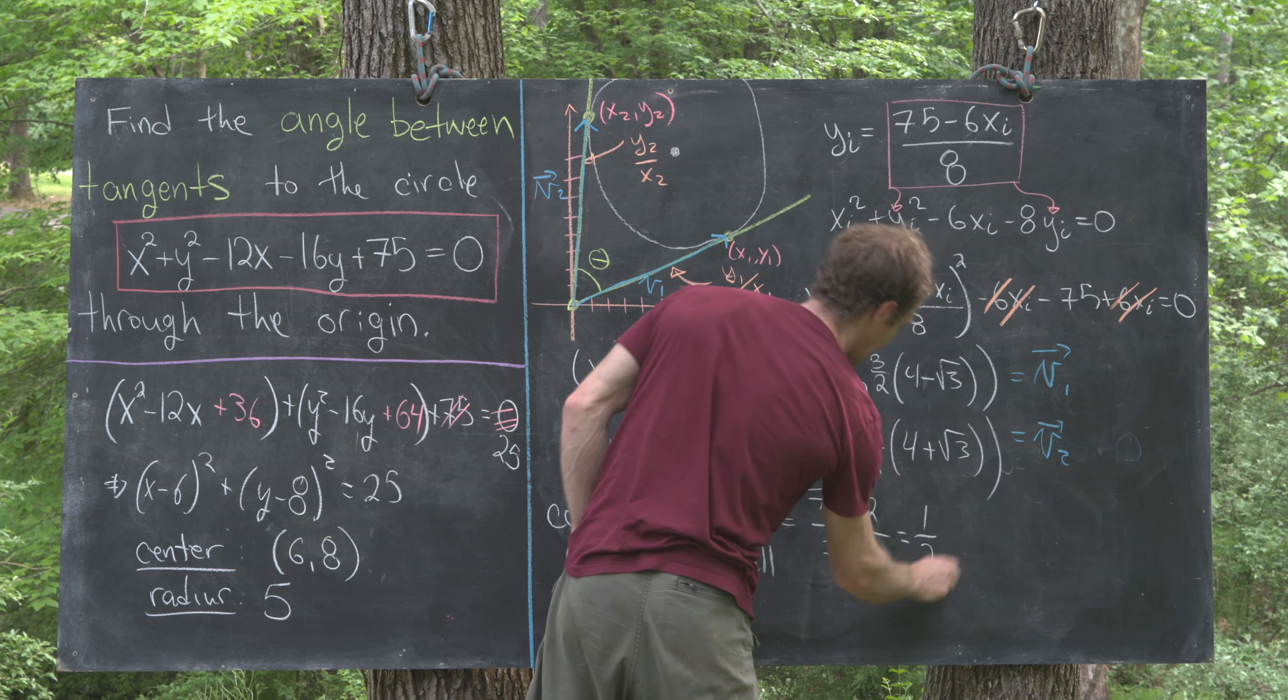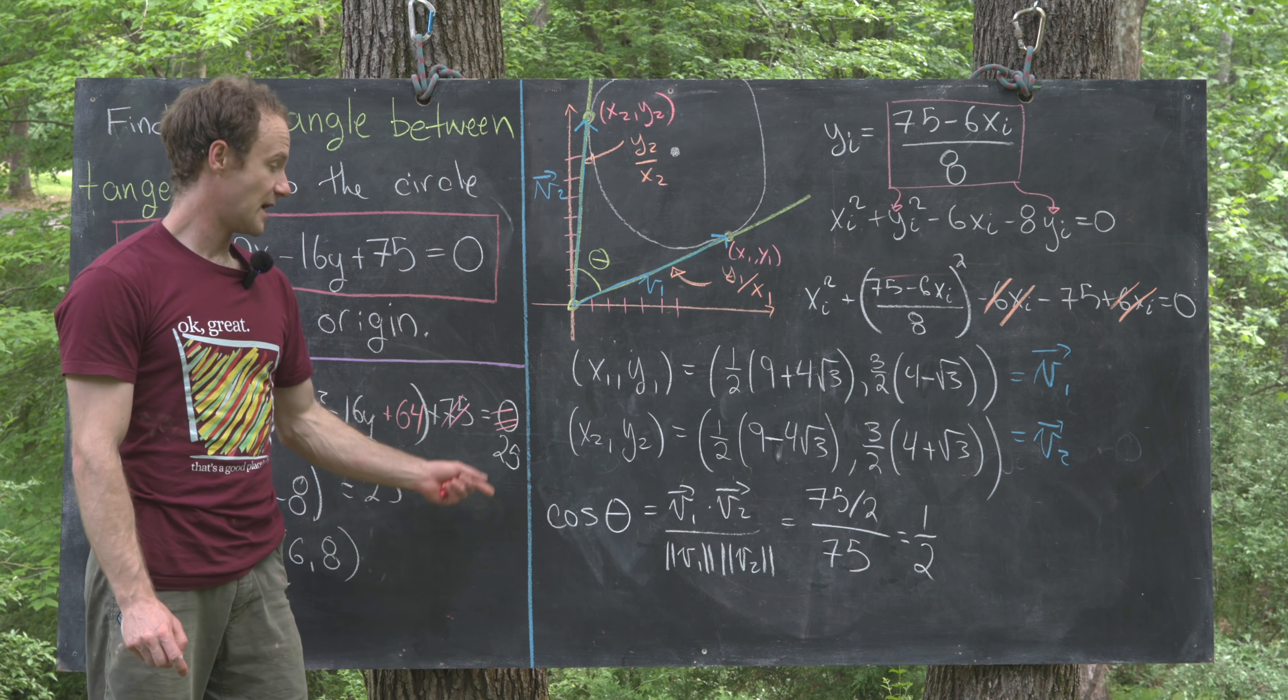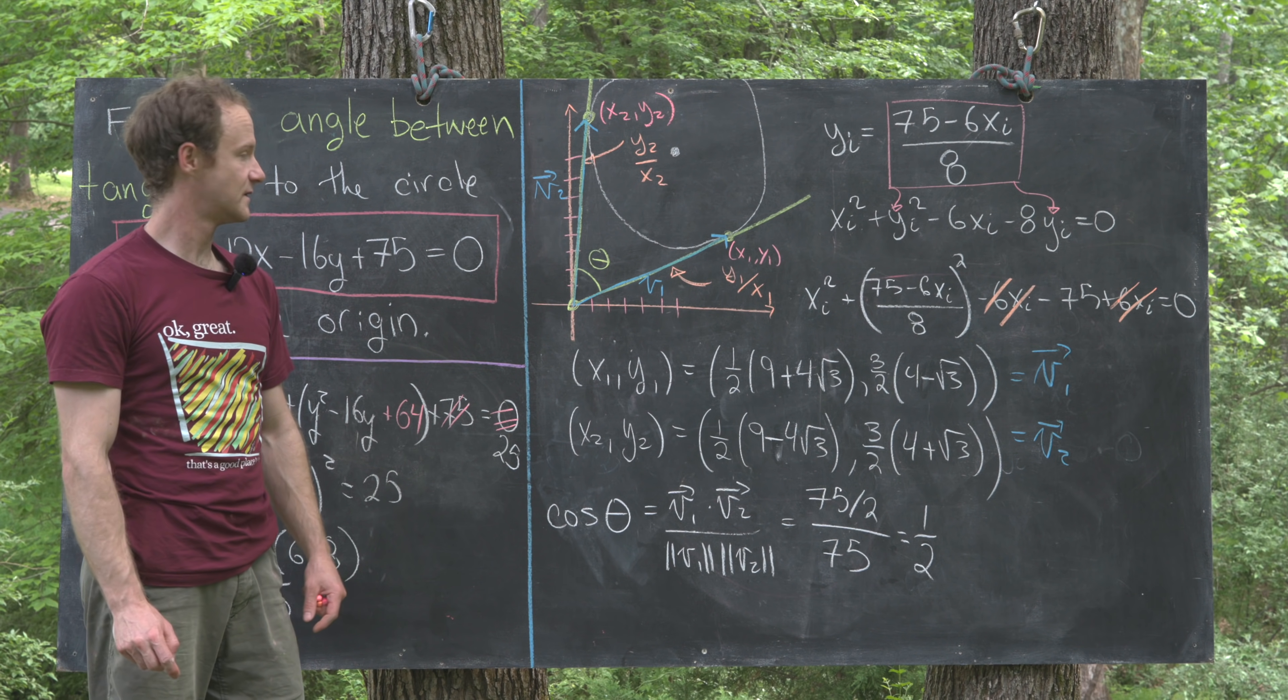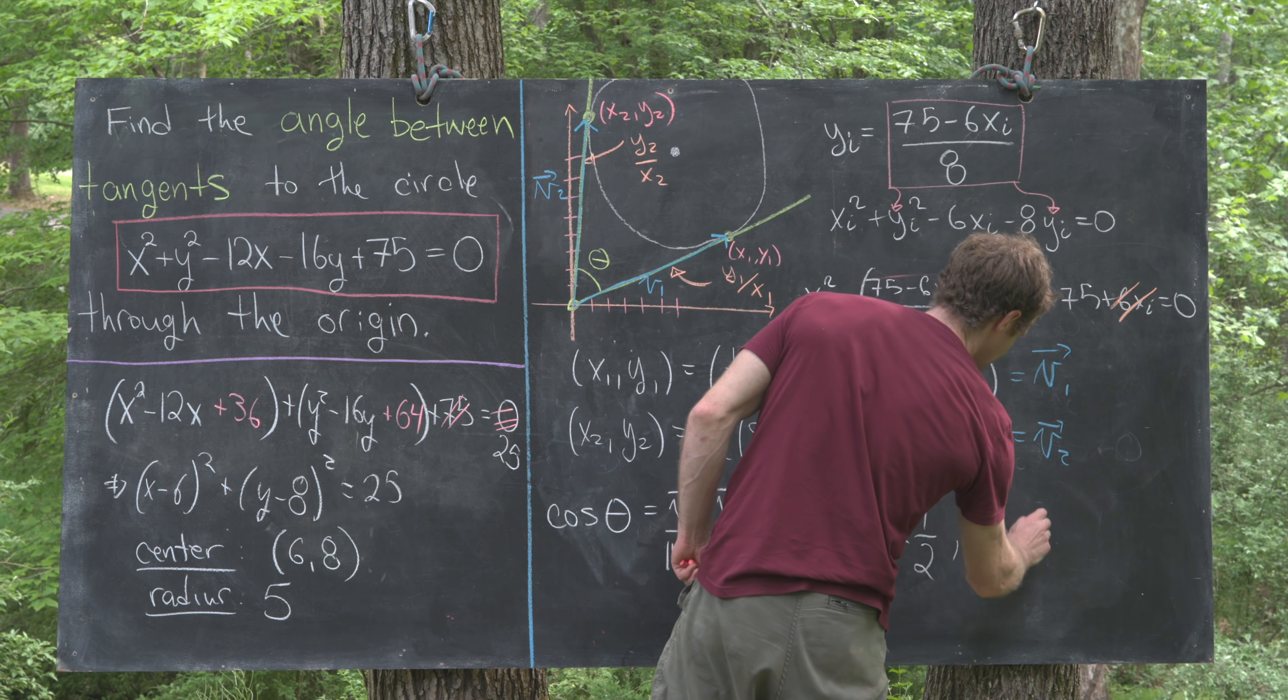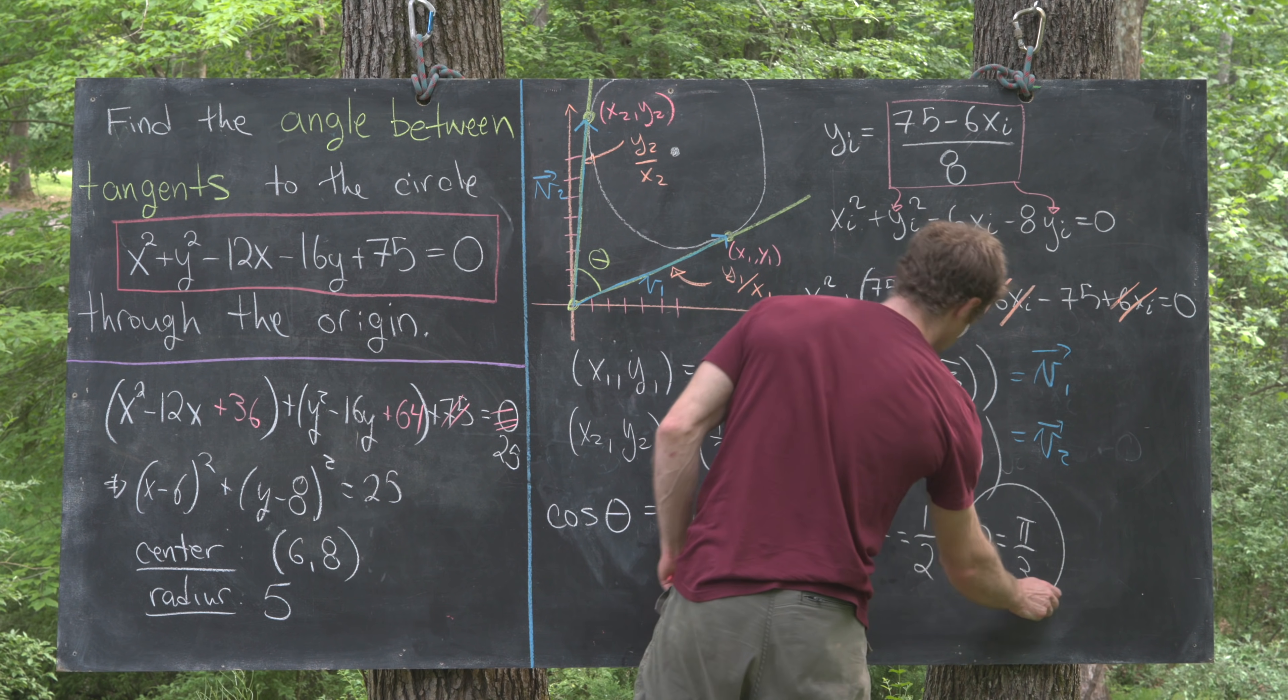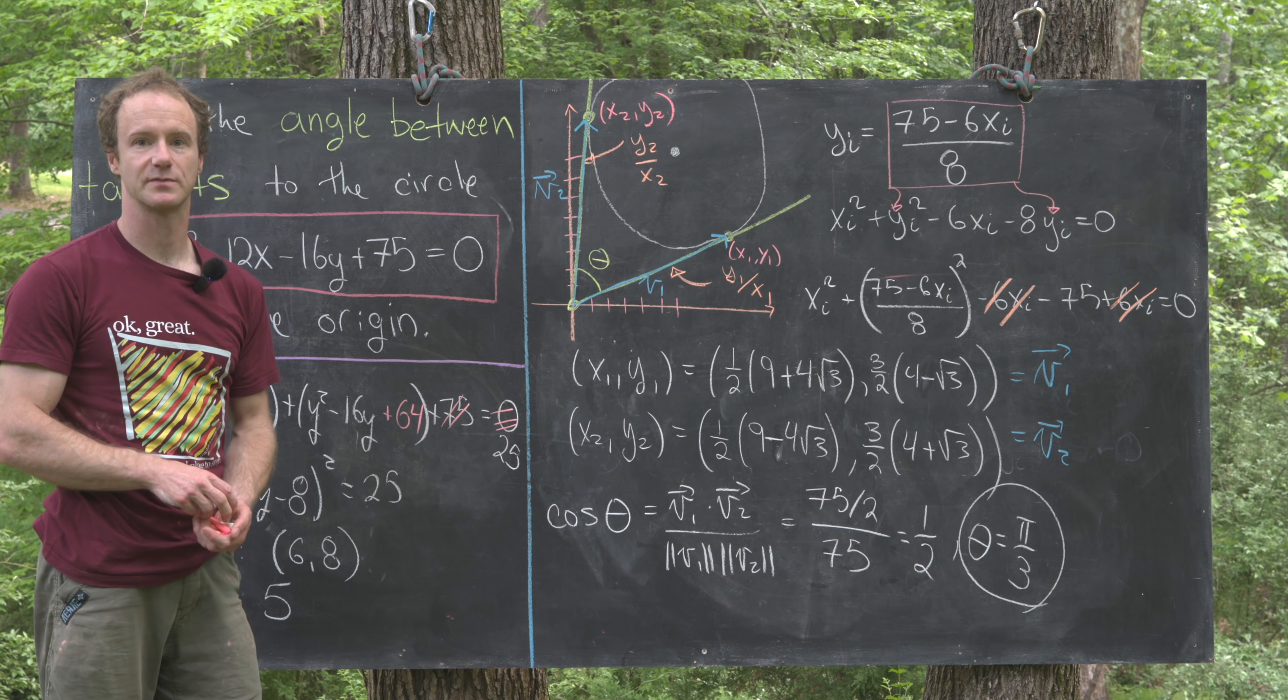In the end, you'll get the cosine of the angle between these two lines is a half. When is cosine a half? Cosine is a half when theta equals pi over 3. So we found that angle between the tangent lines, and that's a good place to stop.